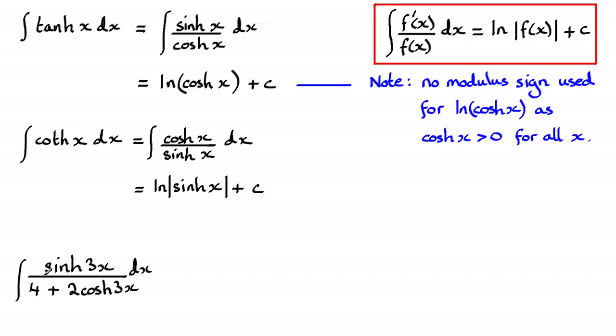Now, we haven't got 6 sinh 3x in the top, but we can make an adjustment by multiplying by a sixth. So what we end up with is one sixth, the natural log of that denominator there, 4 plus 2 cosh 3x, and then the constant of integration c.